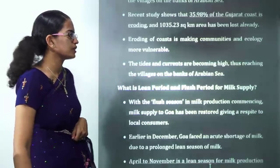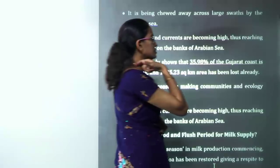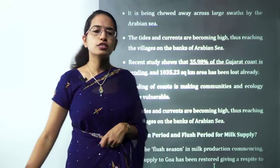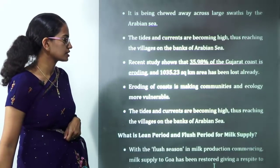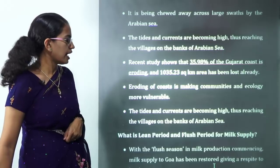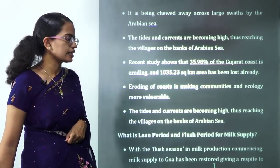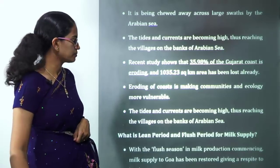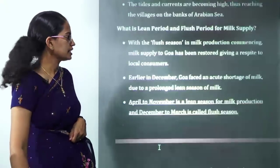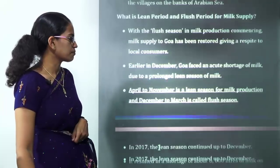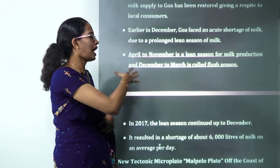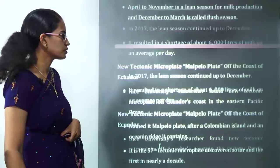Lean period and flush period are two terms used in milk production, recently in news due to a milk production crisis in Goa. The flush period is when there is ample supply of milk, typically from December to March. The lean period is when supply is less, typically from April to November.